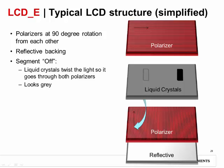Light comes in the first polarizer and comes out all in one direction. Then the crystals turn the light 90 degrees, which allows the light to pass through the second polarizer. Then light reflects off the backing and does everything again in reverse, passing back out the front of the display.